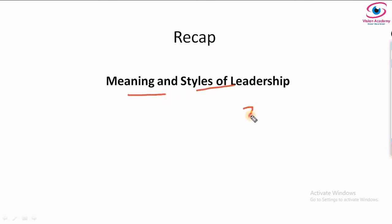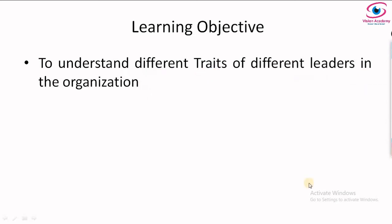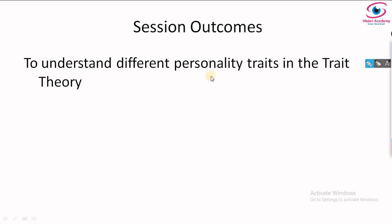We had addressed three styles of leadership: one is autocratic, two is participative or democratic, and third one is free reign or laissez-faire leadership. The learning objective of this video lecture is that you as a student need to understand different traits of different leaders in an organization. The session outcome will be that you need to understand different personality traits in the trait theory.